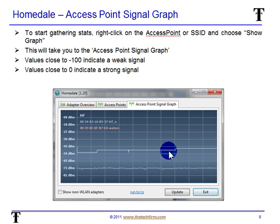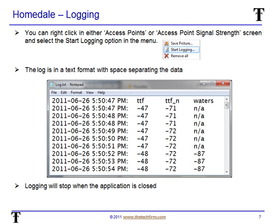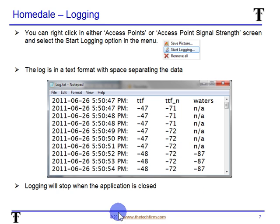This is a relatively good signal here, and that one is not as good but probably still usable. While you look at the graph, you may want to save it for later. You could do a screen capture, but I prefer to start logging, because then you'll have all the actual values and can bring them into Excel to do your own graphs. To do that, right-click on either the access point or the Access Point Signal Strength screen and you'll see a Start Logging option. It's going to start logging in a text format with a space or tab separating the data. The logging will stop once you shut the application off — there is no right-click Stop Logging, just Start or shut the app down.